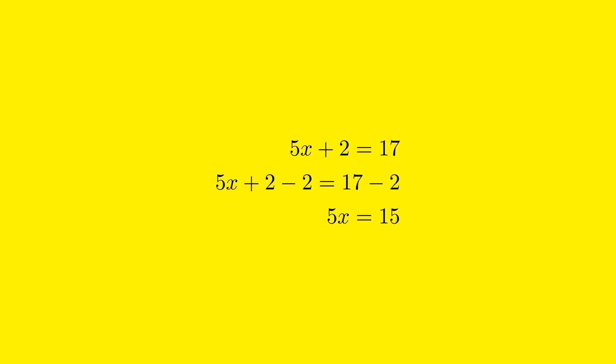To do this, we need to subtract 2 from both sides of the equation. This keeps the equation balanced because we are performing the same operation on both sides. So, subtract 2 from 5x plus 2, which results in 5x because 2 minus 2 is 0. Now subtract 2 from 17 on the right side, which results in 15, because 17 minus 2 is 15.